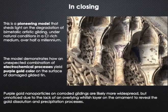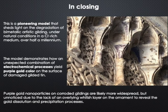In closing, we explain the degradation of this bimetallic artistic gilding, including gold dissolution and nanoparticle precipitation under natural conditions in the presence of chlorides over half a millennium. This shows how an unexpected combination of electrochemical processes yields a purple-gold color on the surface of our damaged gilded tin. Gold nanoparticles on corroded gildings likely occur in other monuments but go unnoticed due to the lack of an overlying whitish layer on the ornament to highlight the purple tint.